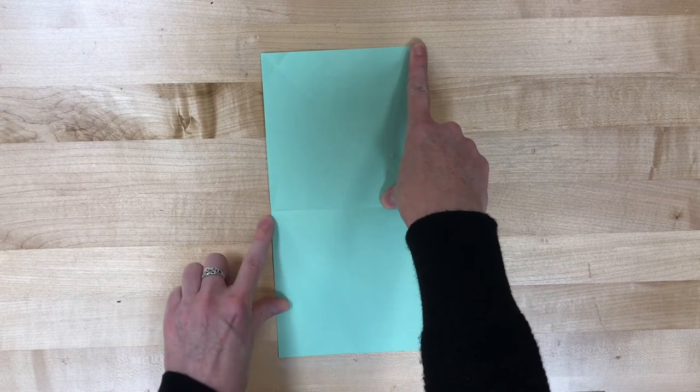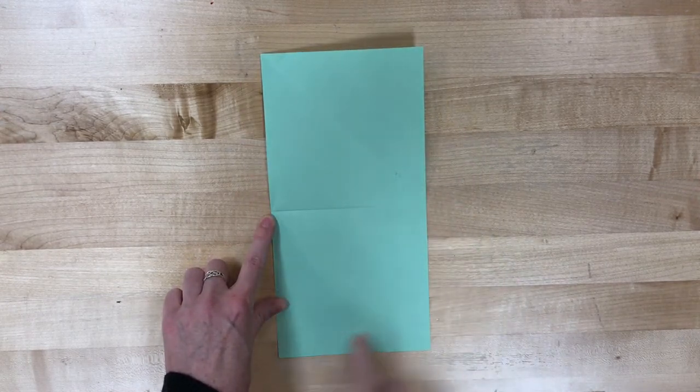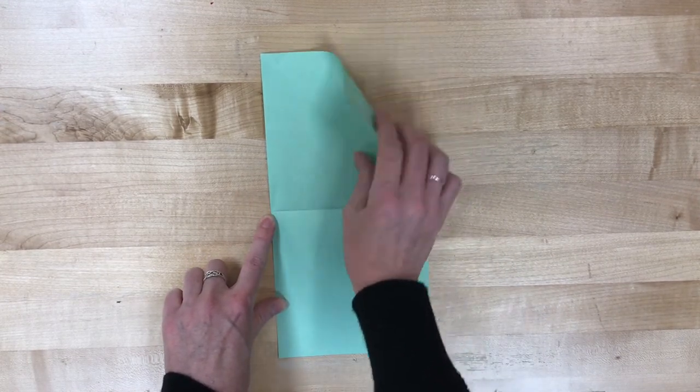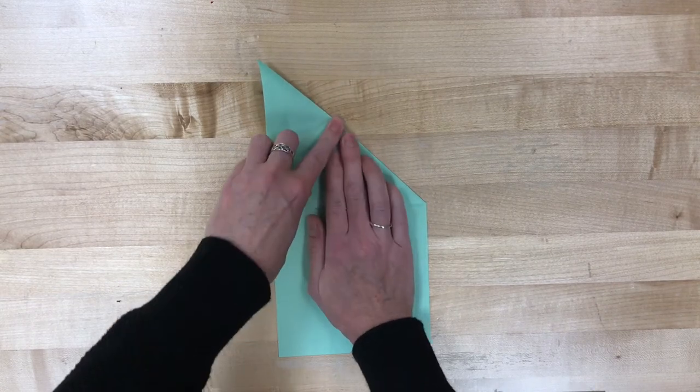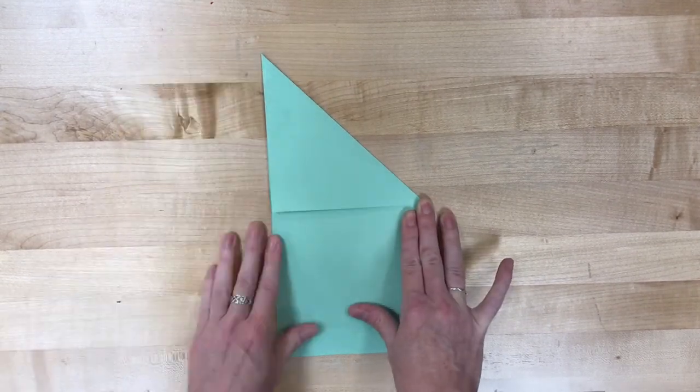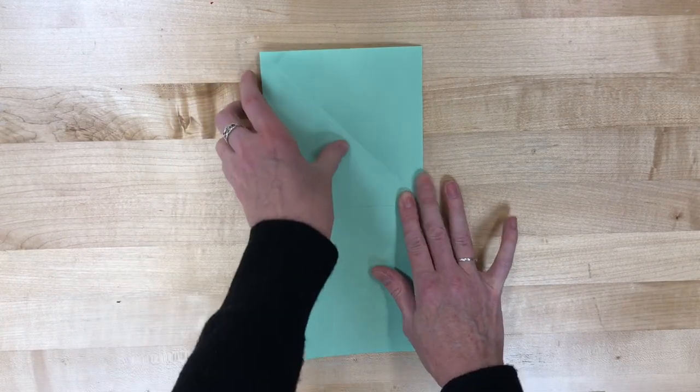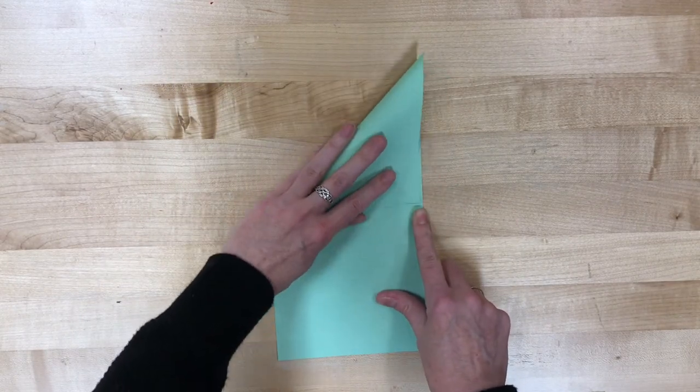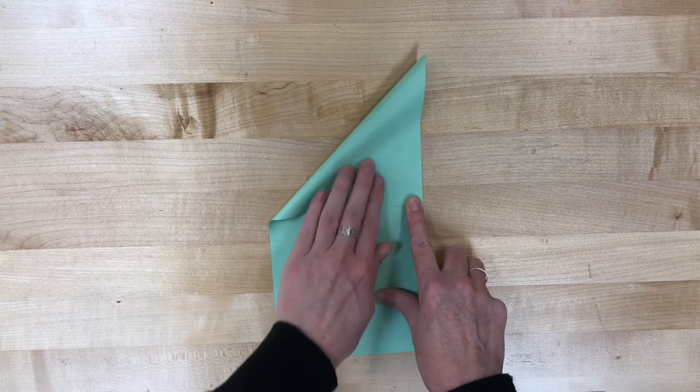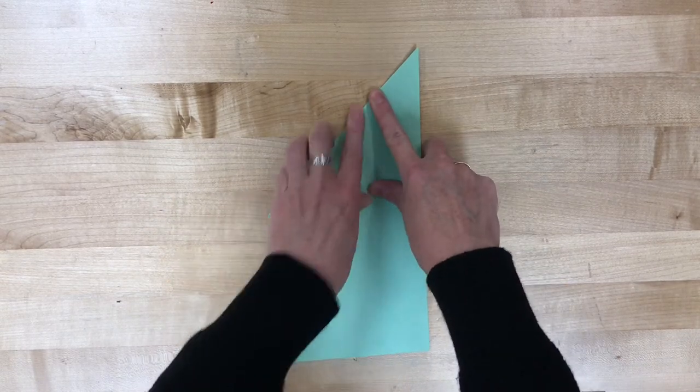We're gonna take the top right corner and we're gonna put it right to the edge of that middle line that we just made. So kind of make a triangle for the top part, unfold it, and do the same thing to the left top corner. Make sure you get a nice sharp crease.